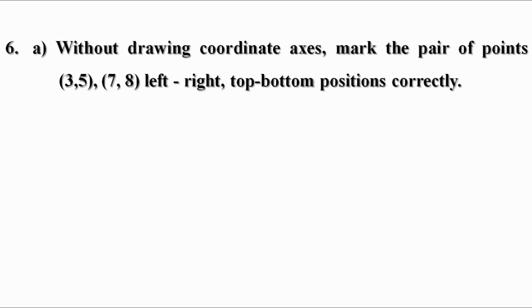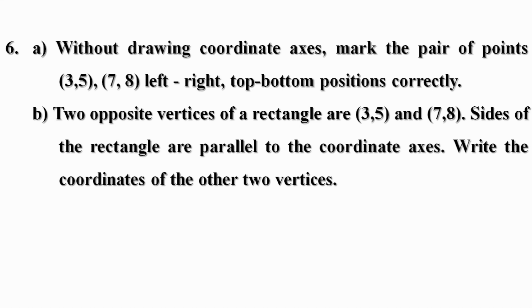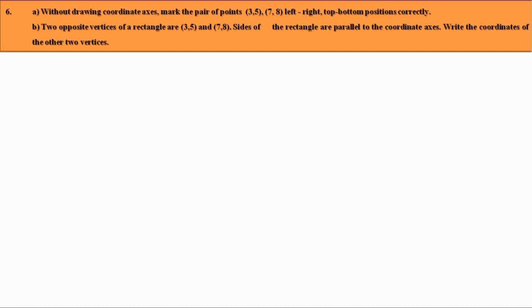Without drawing coordinate axes, mark the pair of points (3,5) and (7,8) in their correct left-right and top-bottom positions. Two opposite vertices of a rectangle are (3,5) and (7,8), and the sides of the rectangle are parallel to the coordinate axes. Write the coordinates of the other two vertices. Looking at the x-coordinates, 3 and 7: since 3 is less than 7, the point (3,5) is to the left of the point (7,8).